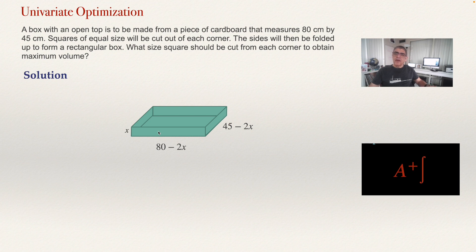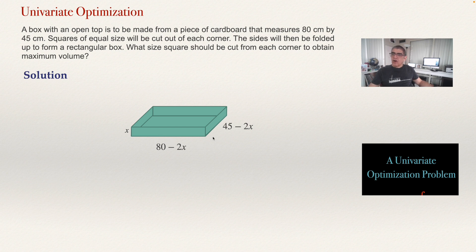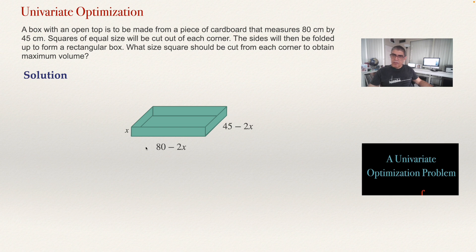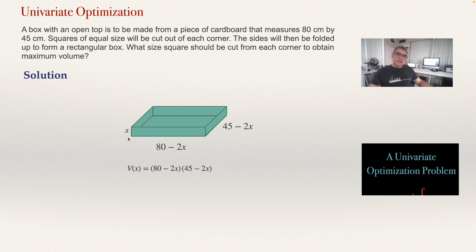This is what solves the problem: express the function that you want to maximize in terms of one variable. In this case we are in univariate optimization. The volume will be the product of the length times the width multiplied by the height of the box. So the volume will be 80 minus 2x, multiplied by 45 minus 2x, and then multiplied by the height x.